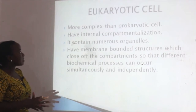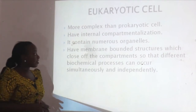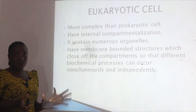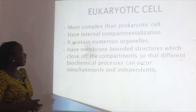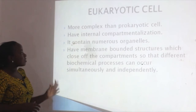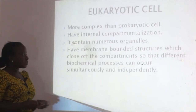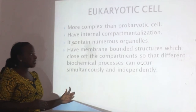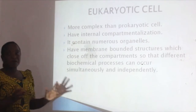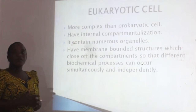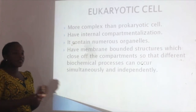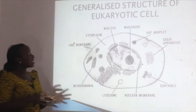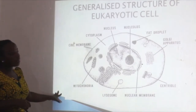Eukaryotic cells are more complex than prokaryotic cells. They have internal compartmentalization and contain numerous organelles. They also have membrane-bound structures which close off compartments, so different biochemical processes can occur simultaneously and independently. The membrane-bound structures allow biochemical reactions or processes to occur without interactions — they can occur routinely and independently. Here is the generalized structure of a eukaryotic cell.